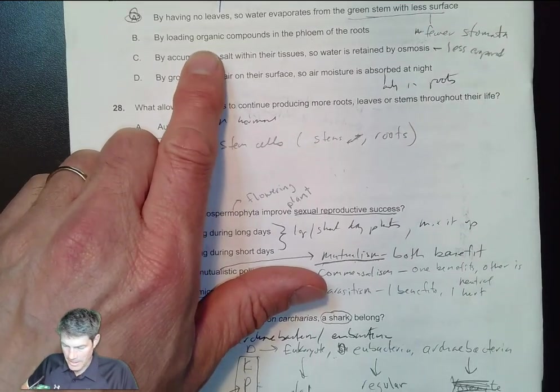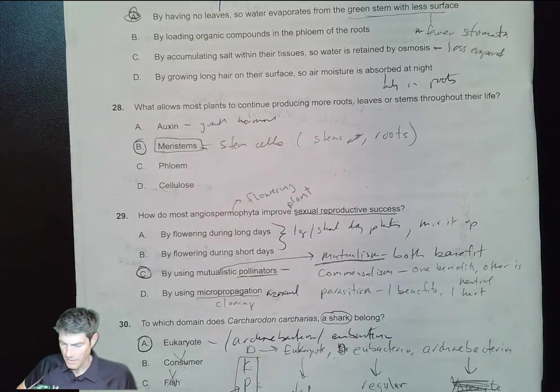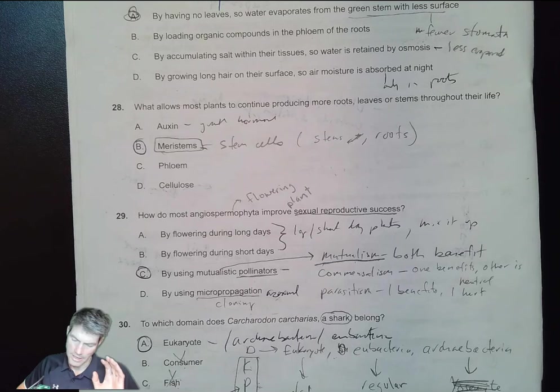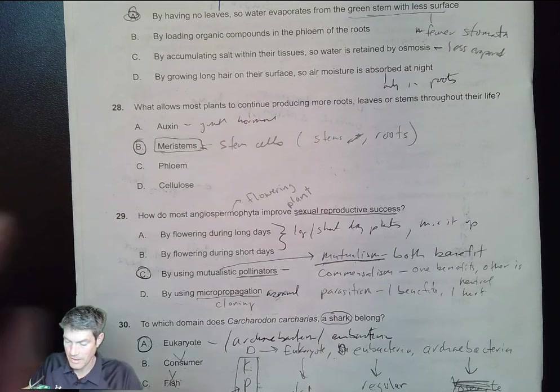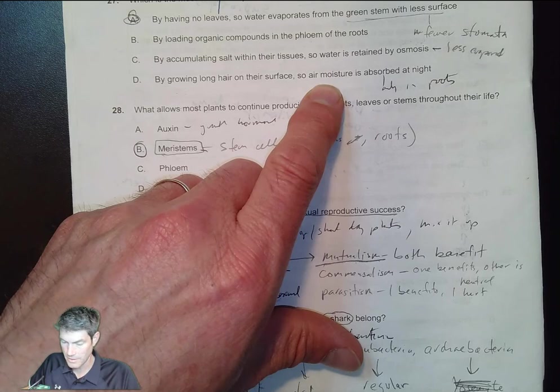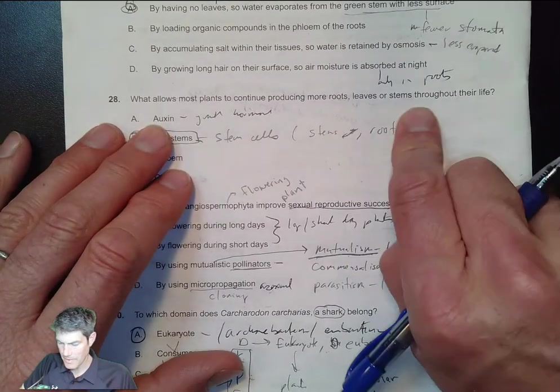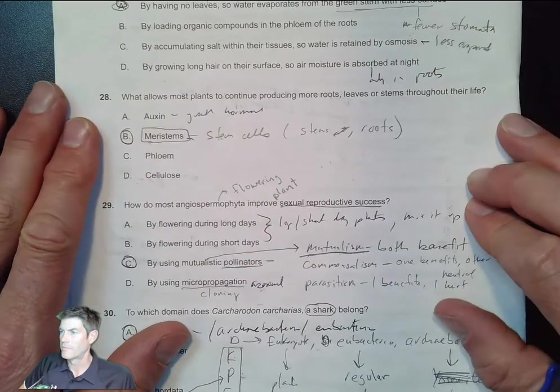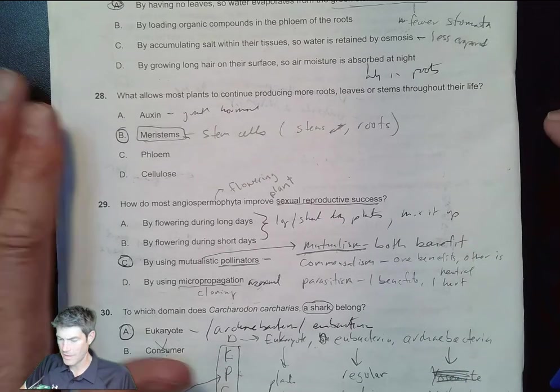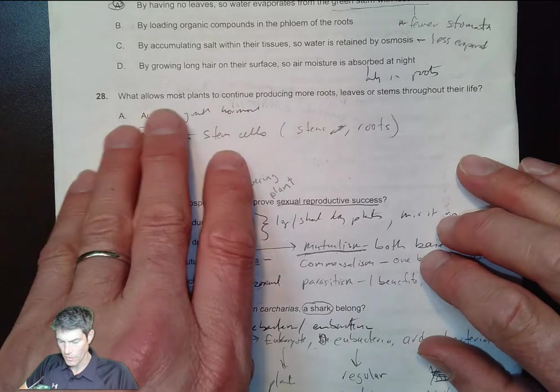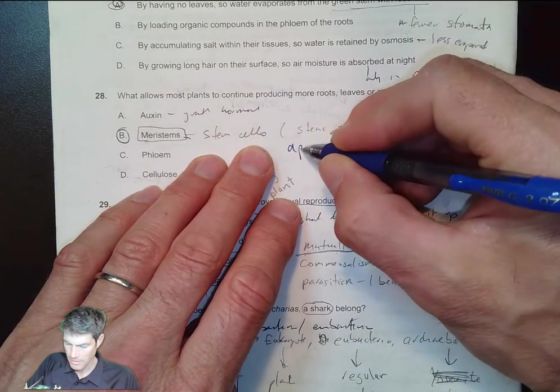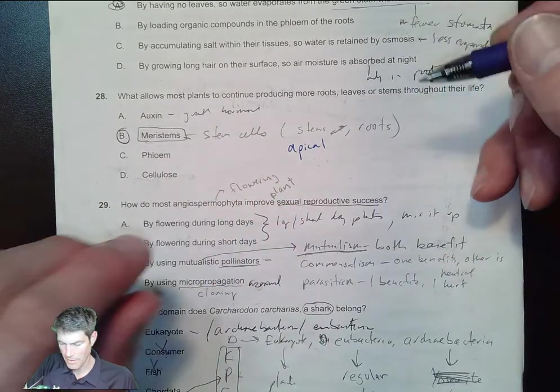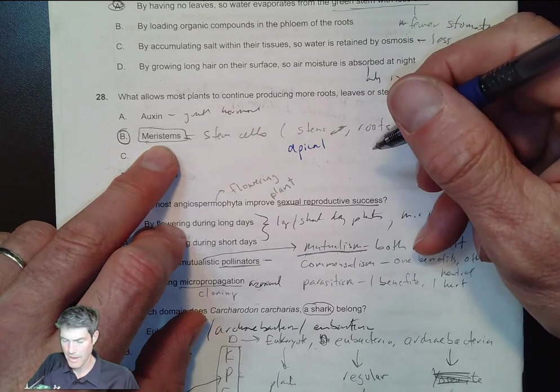Remember desert plants don't want to accumulate salt, and growing long hair on the surface - they don't absorb moisture on those hairs. Remember plants are very cool - they can get taller, build new parts throughout their life. These meristems - the root meristem and the apical stems and roots, the apical meristem at the very top.